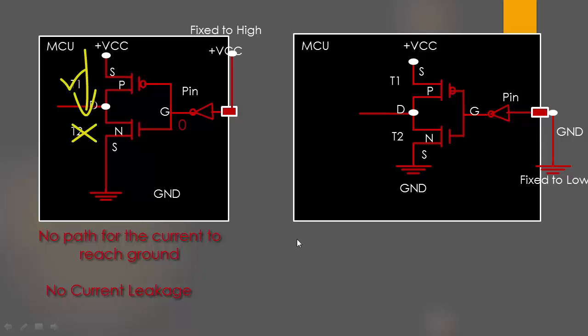All right. Again in this case when the pin is fixed to low voltage T1 is off and T2 is on and still current from VCC cannot able to reach the ground. So in this case also there is no leakage.